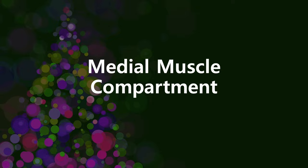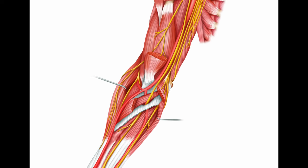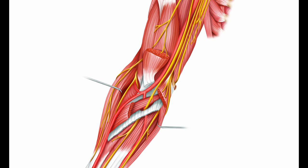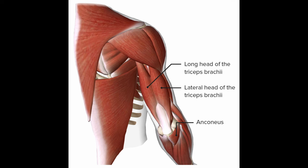The medial muscle compartment comprises flexor muscles including the flexor carpi radialis, flexor carpi ulnaris, palmaris longus, flexor digitorum superficialis, and pronator teres. This compartment's common flexor tendons attach at the medial epicondyle, though they are shorter than the lateral elbow's common extensor tendon. The posterior muscle compartment includes the triceps and anconeus muscles, with the triceps tendon attaching to the olecranon process of the ulna.